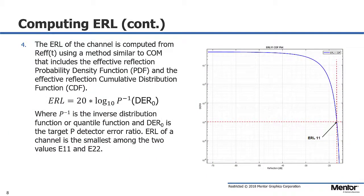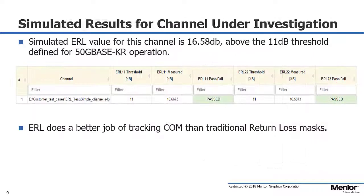That waveform is then post-processed to produce the metric for ERL, which is compared to a target value. Here we can see the ERL metric allows this channel to pass even though the traditional frequency domain mask was failing.